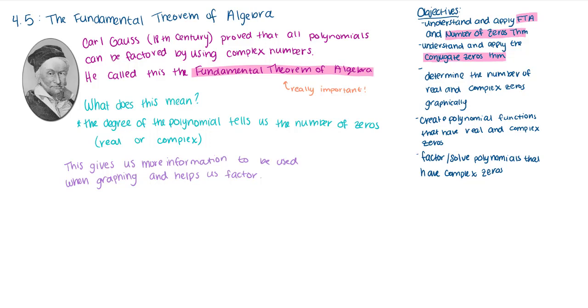In the 18th century, Karl Gauss, who is pictured on the left, proved that all polynomials can be factored by using complex numbers. He called this idea the fundamental theorem of algebra, which is a really important theorem that we're going to be using throughout this section.